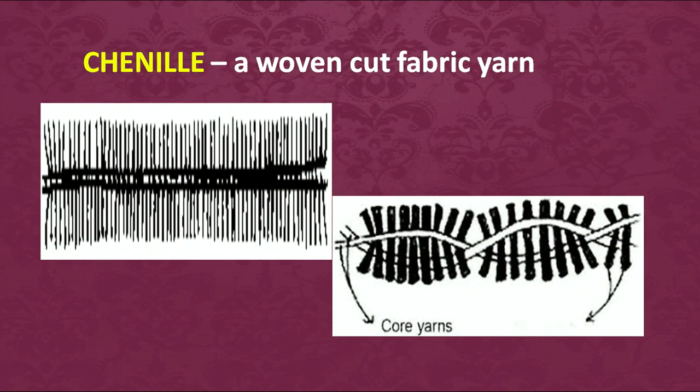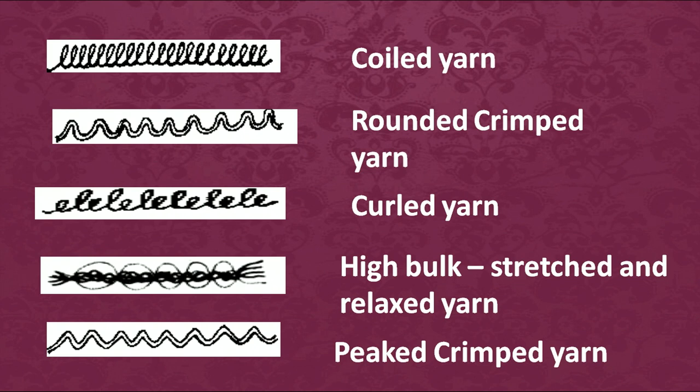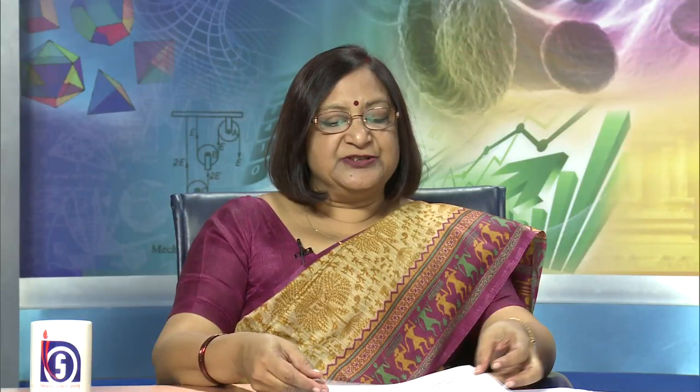Chenille has a fine, very smooth surface fabric used in special locations. Other examples of complex yarns include coiled yarn, crimped yarn, curled yarn, high-bulk stretched and relaxed yarn, and beat-crimped yarn. Complex machineries are used to create those effects in yarns and in the resulting fabrics.